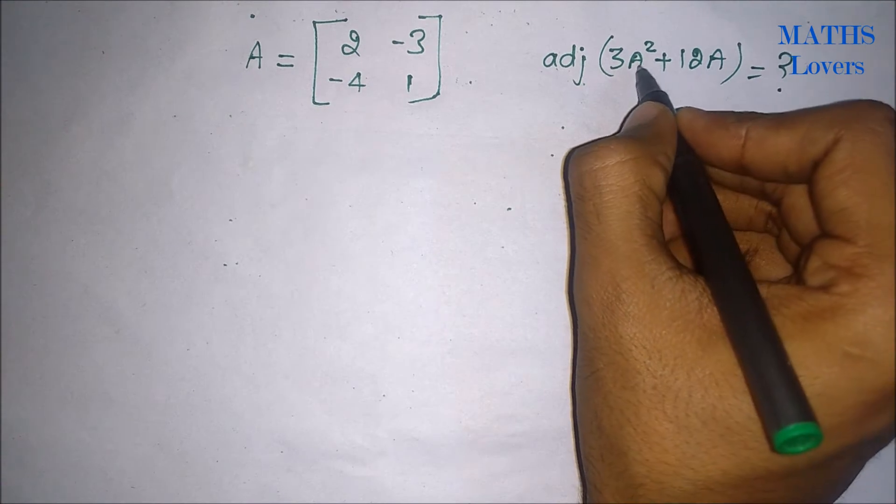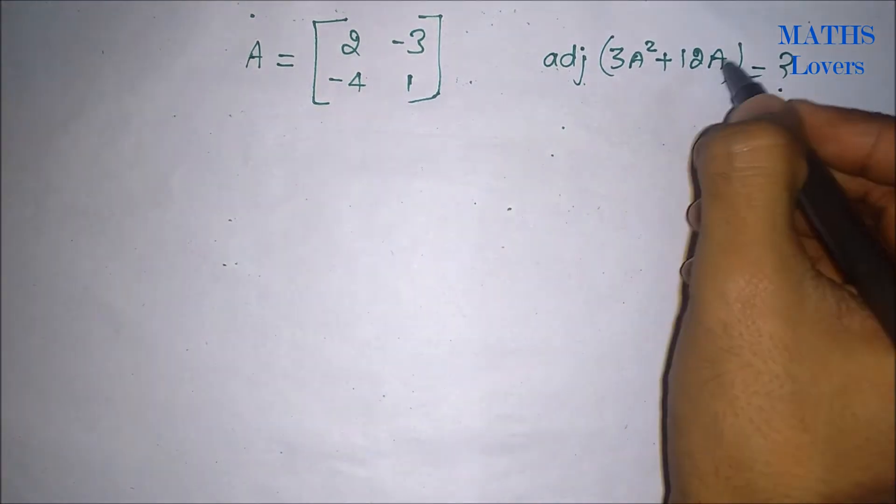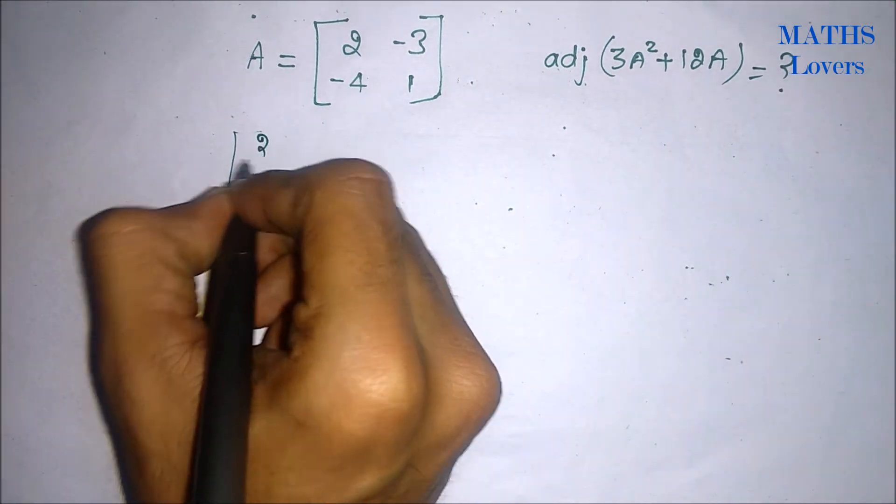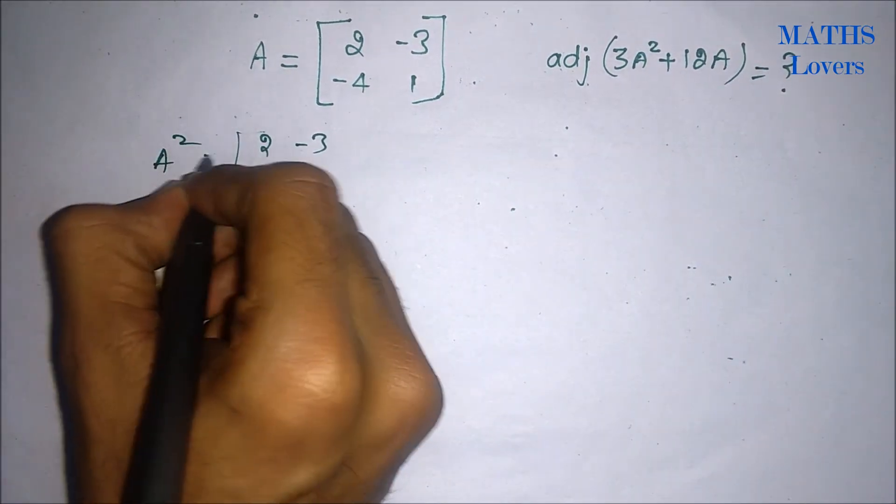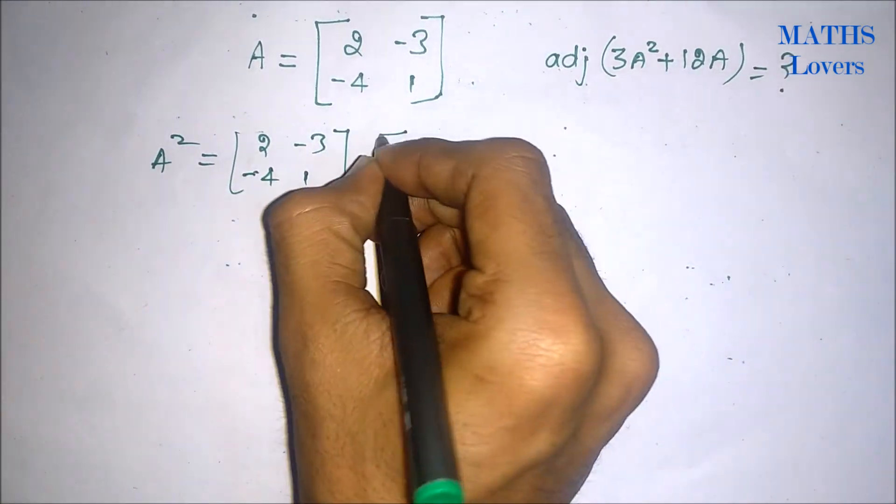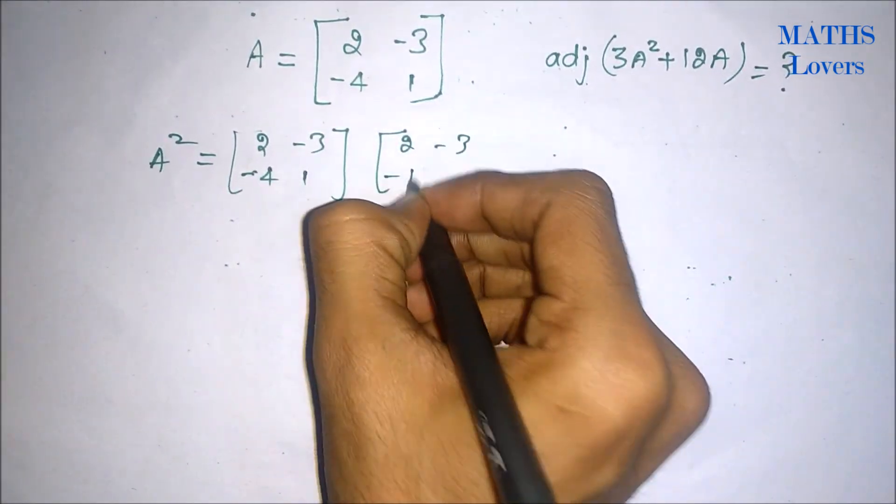So how will we do this? First we will find A squared and then we will sum up these things. So for finding A squared we will write 2, minus 3, A squared will be A multiply A, that means minus 4, 1 and again 2, minus 3, minus 4 and 1.